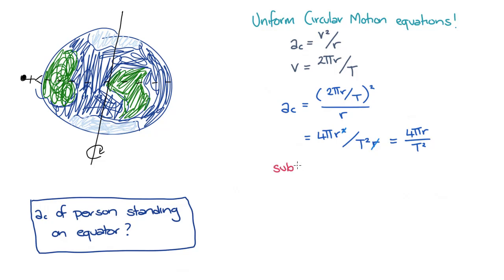So now we can substitute values in. The radius of the Earth is about equal to 6400 kilometers, and the period of the rotation of the Earth is 1 day, or 24 hours.